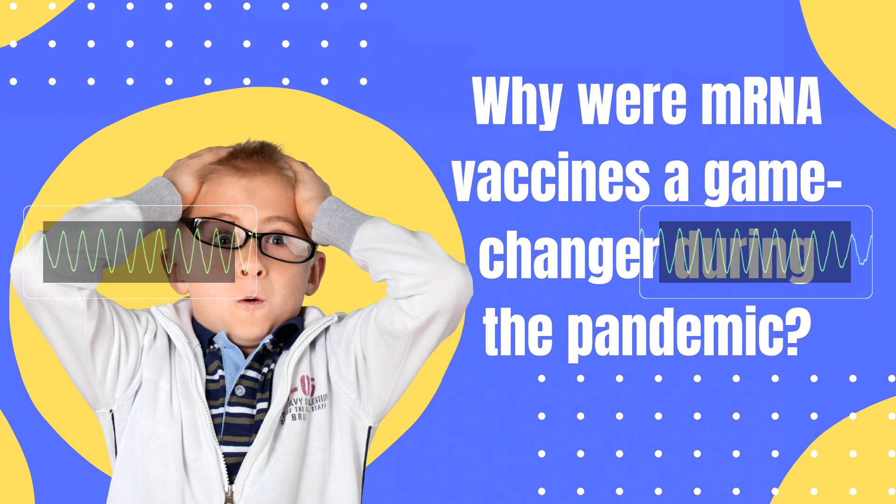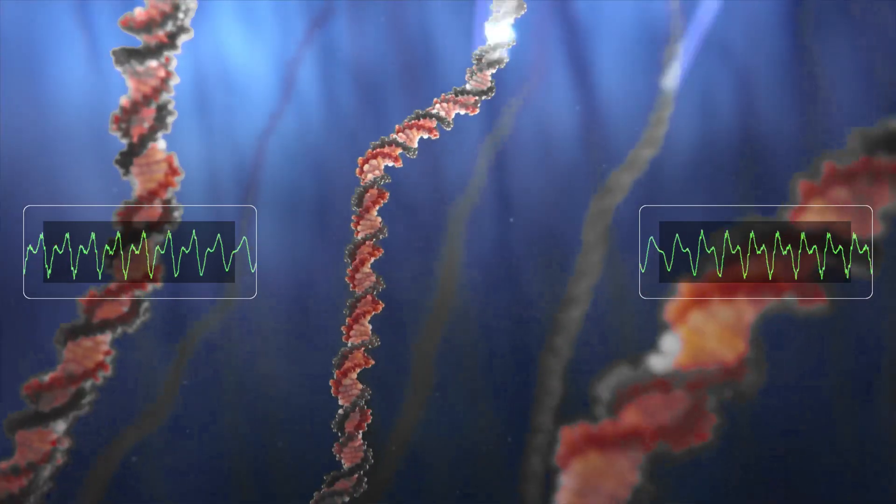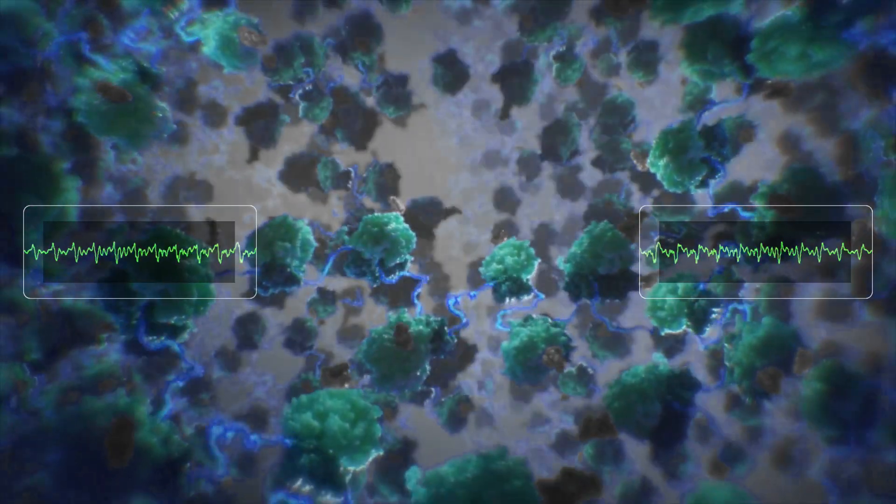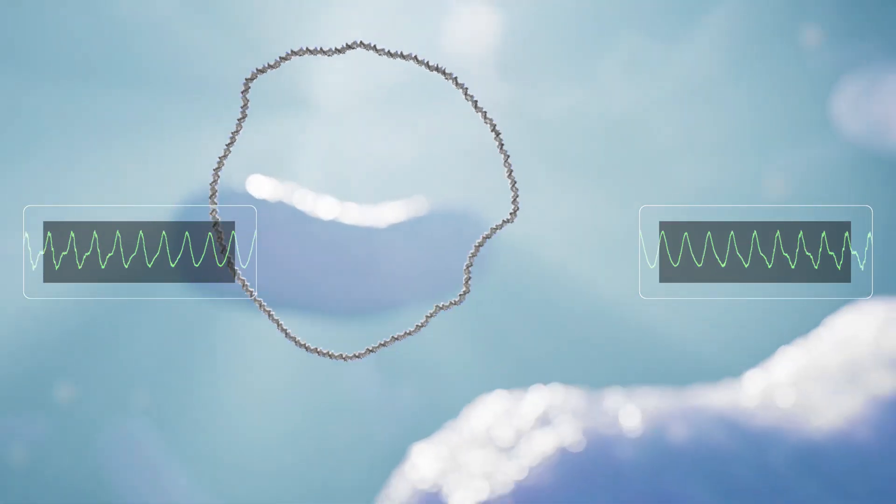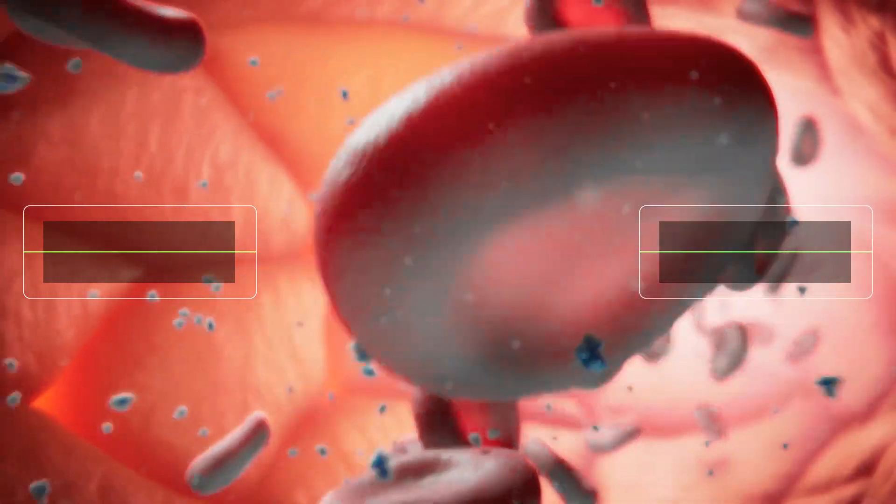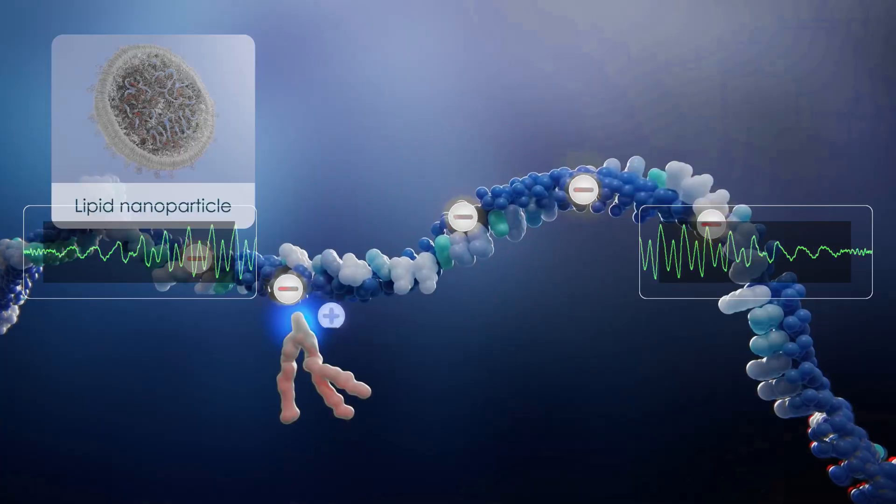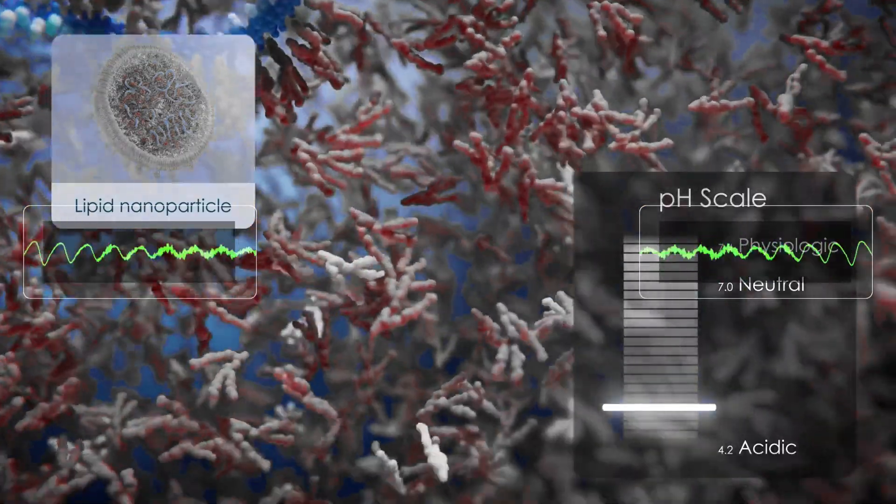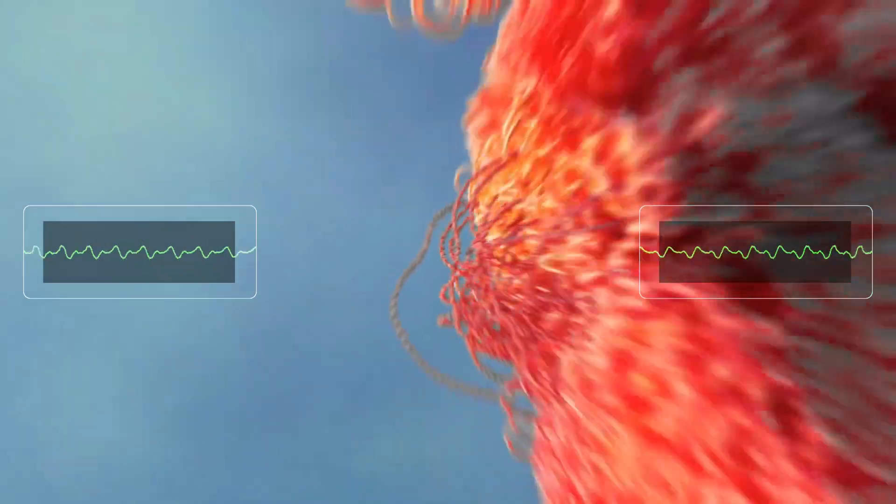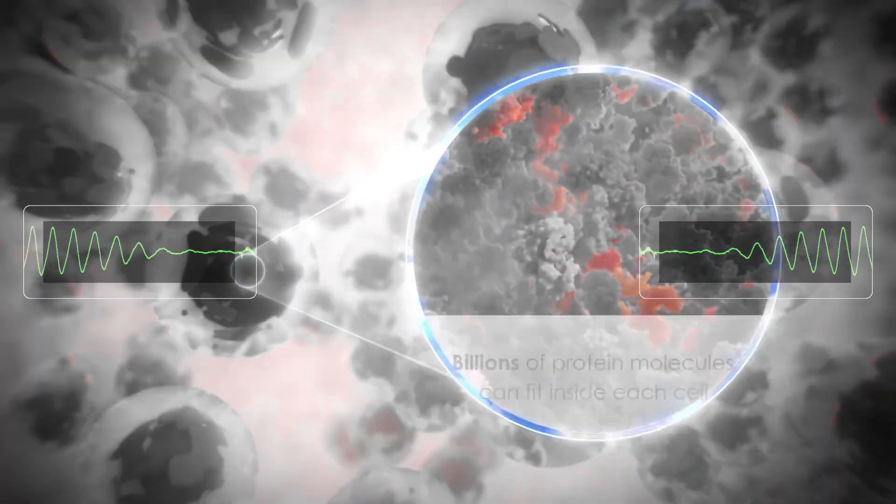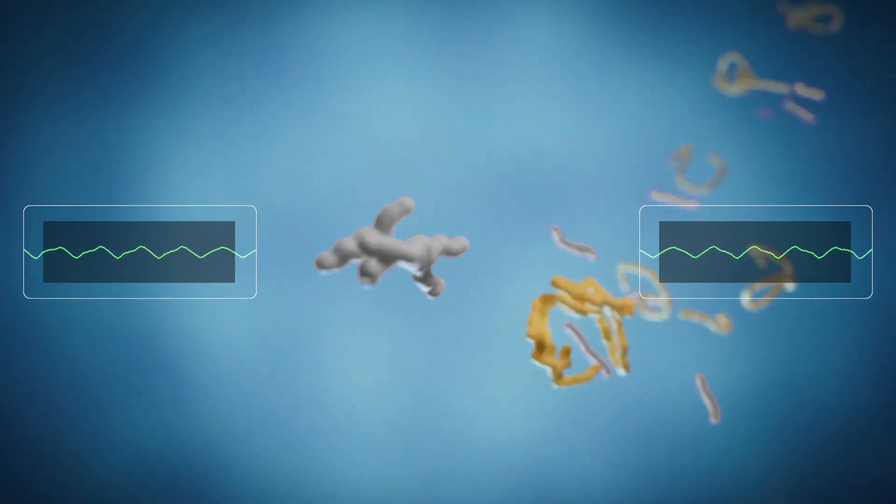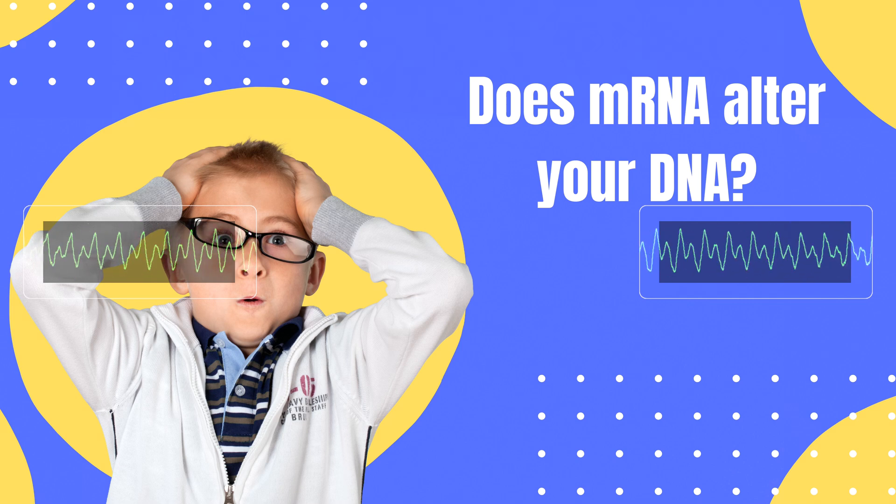Why were mRNA vaccines a game-changer during the pandemic? Once the coronavirus genome was decoded, scientists were able to design mRNA vaccines in just a few weeks. This speed and flexibility helped prevent countless hospitalizations and deaths. Many experts consider this one of the most significant breakthroughs in modern vaccine science.